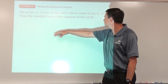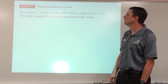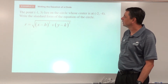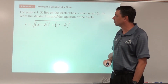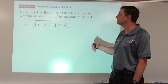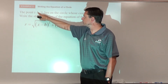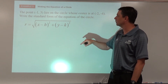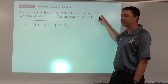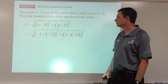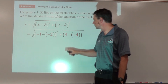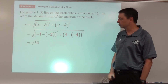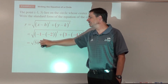Given a point on the circle and the center, we need to write the standard form equation. First we find the radius using the distance formula. With the point (-1, 3) and center (-2, -4): r = √[(-1 - (-2))² + (3 - (-4))²] = √[1² + 7²] = √[1 + 49] = √50.